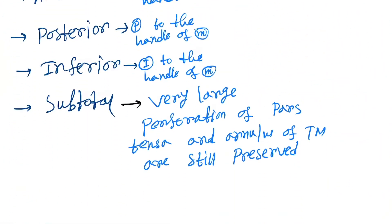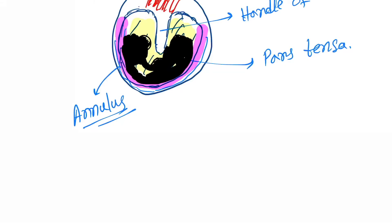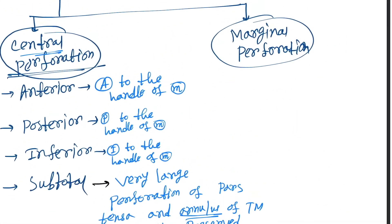The subtotal perforation is a very large perforation of pars tensa, and the annulus of the tympanic membrane is still preserved. Let's see how it looks — the annulus is preserved so the affected part is central. You can see the subtotal perforation here, where the annulus which is preserved is not affected. So these are the four types of central perforation.